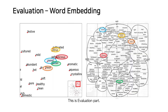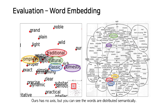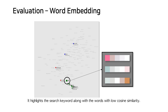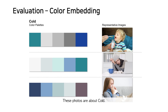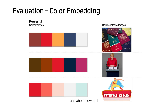Next is the evaluation. First is a comparison with Kobayashi's word space, which is distributed on the warm-cold and soft-hard axes. Ours has no axis, but the words are distributed semantically. The figure demonstrates how users can navigate embedded words with keyword search functionality, highlighting the search keyword along with words of low cosine similarity. The following are color scheme generation and main image extraction results for keywords such as cold, future, good, natural, and powerful.